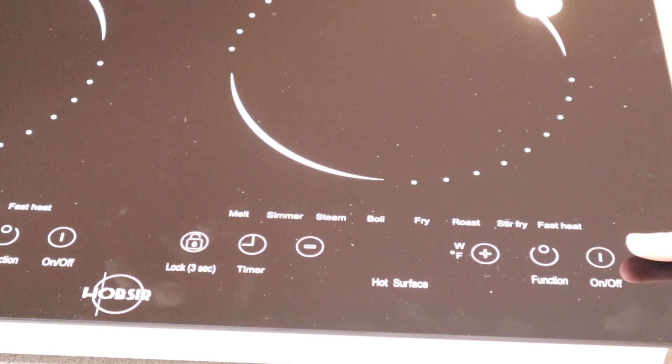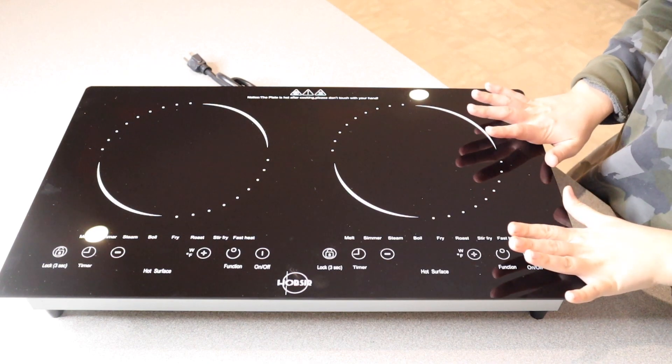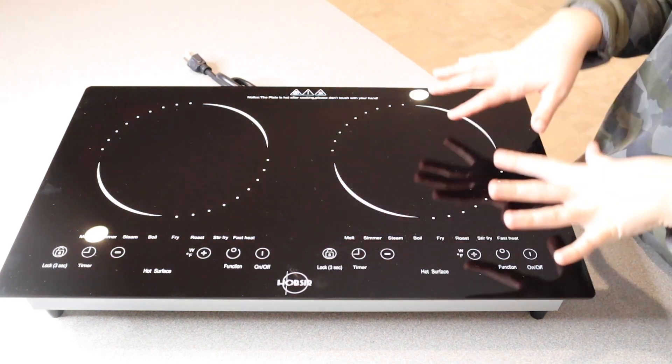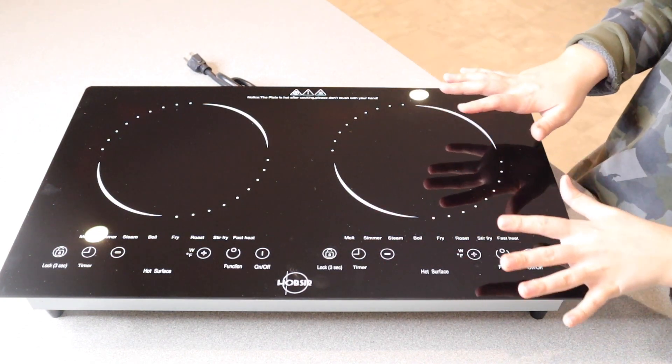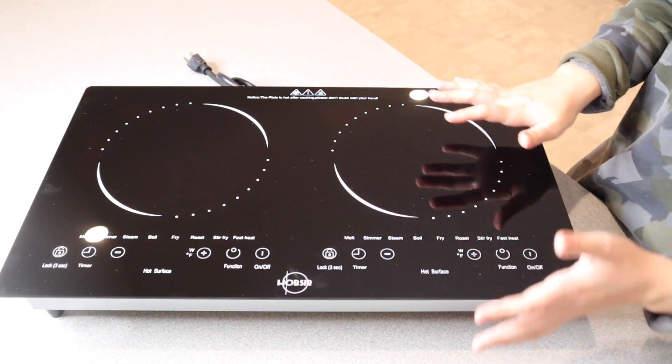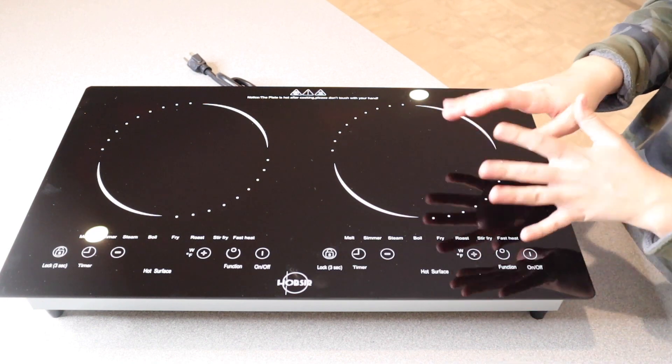And then right over here we have the on and off button. Something that I really like about this cooktop is not only that these are completely independent heat sources so you can just use one or the other or both at the same time, but I also like that you're essentially going to be able to use any type of vessel on top of here.